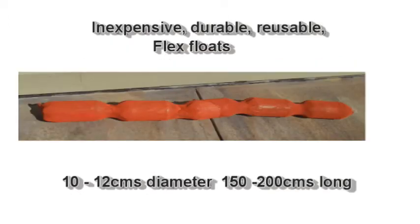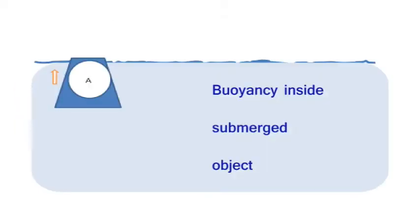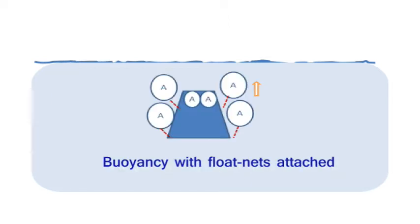Raising a large object would require thousands of inexpensive, durable, reusable flex floats. These floats are between 10 and 12 centimeters in diameter and one and a half meters to 2 meters long. The buoyancy can be positioned inside a submerged object that is close to the surface or within nets attached to the outside.